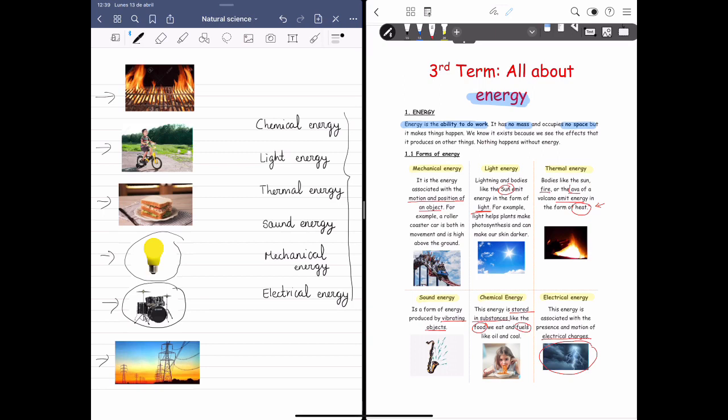And you check if you were right or wrong. The fire, it's a thermal energy because it produces heat. The boy which is riding a bicycle, it's the mechanical energy. Remember the one that is related to motion.